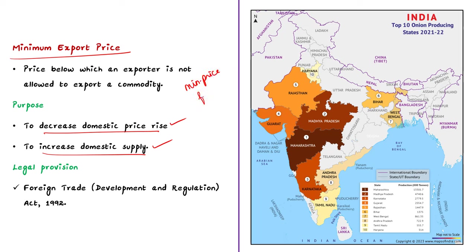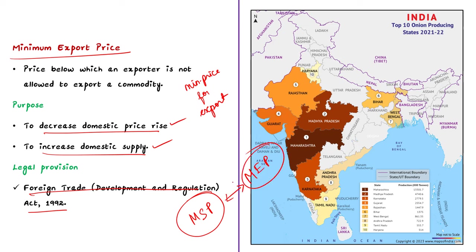Government imposes MEP under the Foreign Trade Development and Regulation Act 1992. Note that minimum export price is different from minimum support price — MEP is different from MSP. MSP is the minimum price at which the government purchases crops from farmers, so don't confuse MEP with MSP. Looking at onion production, Maharashtra is a leading producer of onion in India, followed by Karnataka, Gujarat, Bihar and Madhya Pradesh.